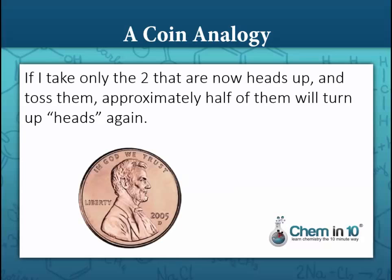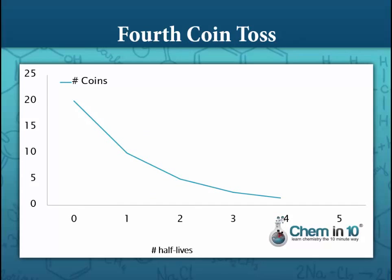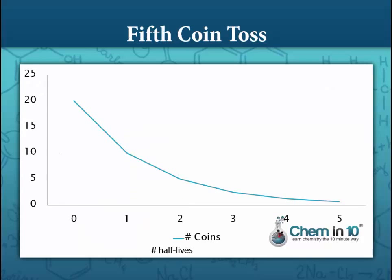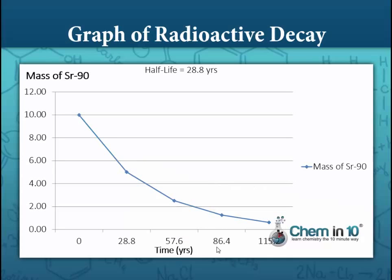If I take only the 2 that are now heads up and toss them, approximately half will turn up heads again. Therefore, I now have 1 head — this is half-life number 4. I now have only 1 coin. If I take the last coin and toss it, there's a 50-50 chance it will be heads. Let's say it comes up tails, so now I have 0 heads. Our finished plot would look like this, and this is the same thing as plotting the radioactive decay of an isotope.